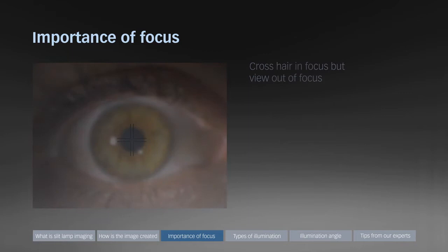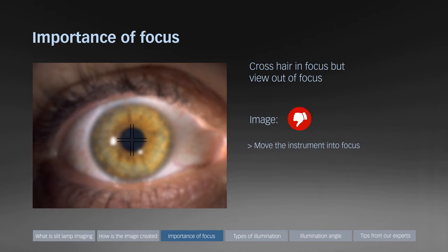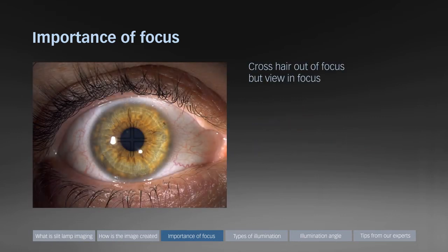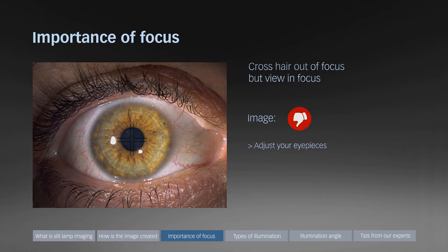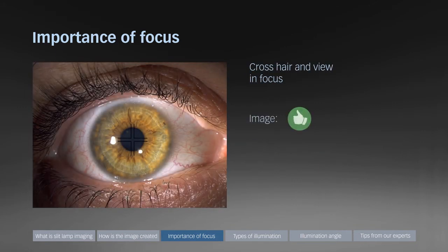If by looking through the eyepieces the crosshair is in focus but the view is out of focus, you need to move the slit lamp into focus. If the crosshair is out of focus but the view is in focus, you need to adjust your eyepieces. If the crosshair and the view are both in focus, you can be sure that the captured image is going to be perfectly in focus.